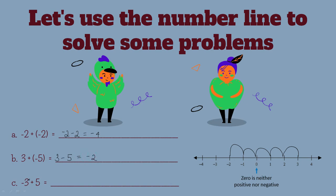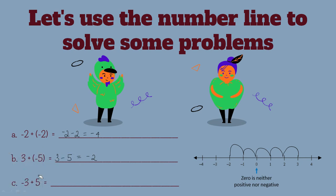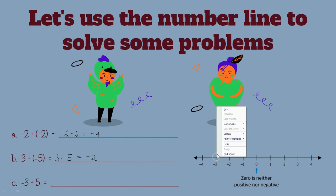Here is the last one: negative three plus five. So we start with negative three and we add. When you add, you go to the right of the number line. We're going to start with negative three and move to the right.